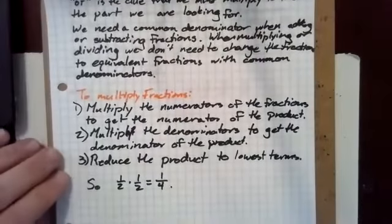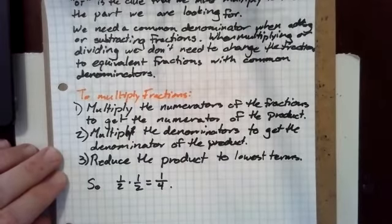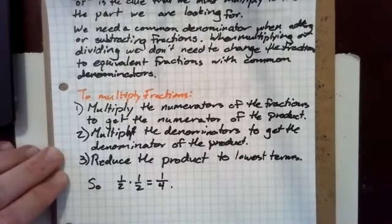To multiply fractions, first multiply the numerators of the fractions to get the numerator of the product, then multiply the denominators to get the denominator of the product, and then reduce the product to lowest terms. So one half times one half is one fourth.